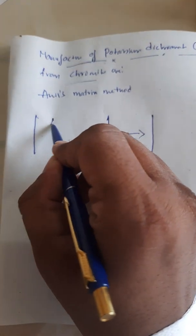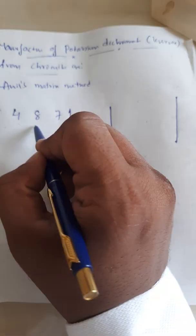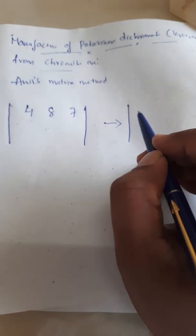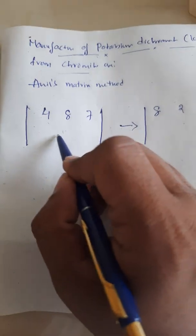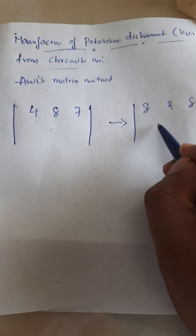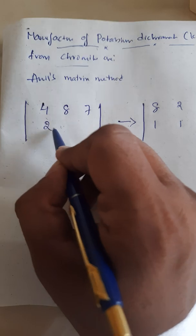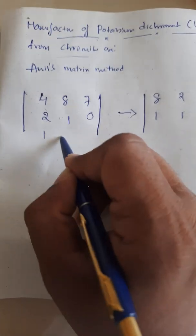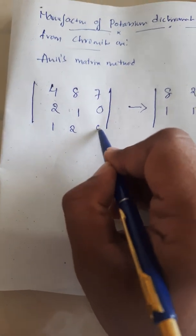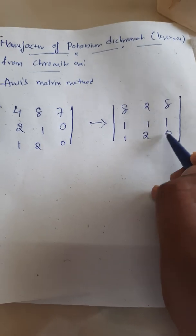In the first number matrix, the first row is 4, 8, 7. For the second matrix, the first row is 8, 2, 8, the second row is 1, 1, 1, and the third row is 1, 2, 0. The third row is the same for both matrices: 1, 2, 0.